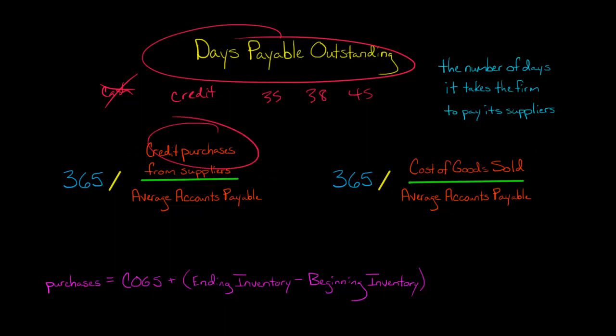So to calculate the number of credit purchases from suppliers, you could take the company's cost of goods sold and then add the change in the inventory. So the ending inventory minus the beginning inventory. So if there was an inventory buildup over the period, if this number was positive, you would add that to cost of goods sold.